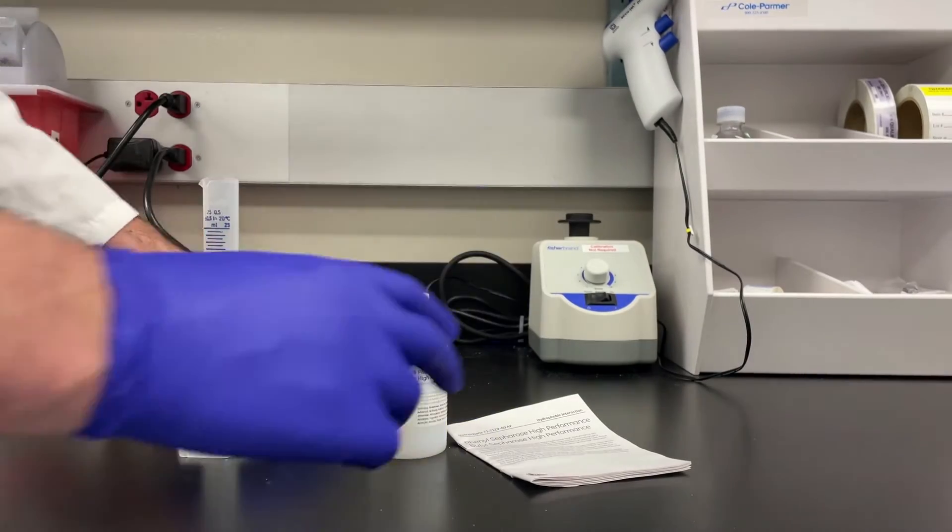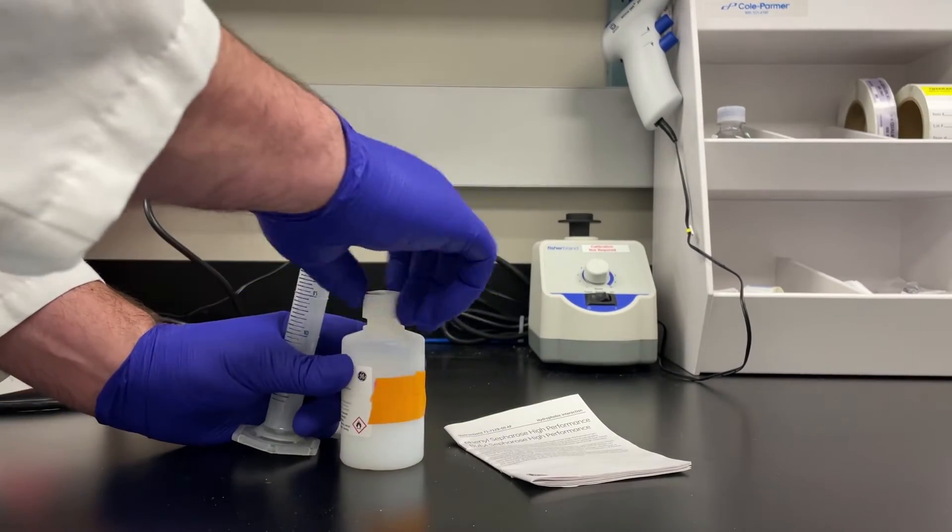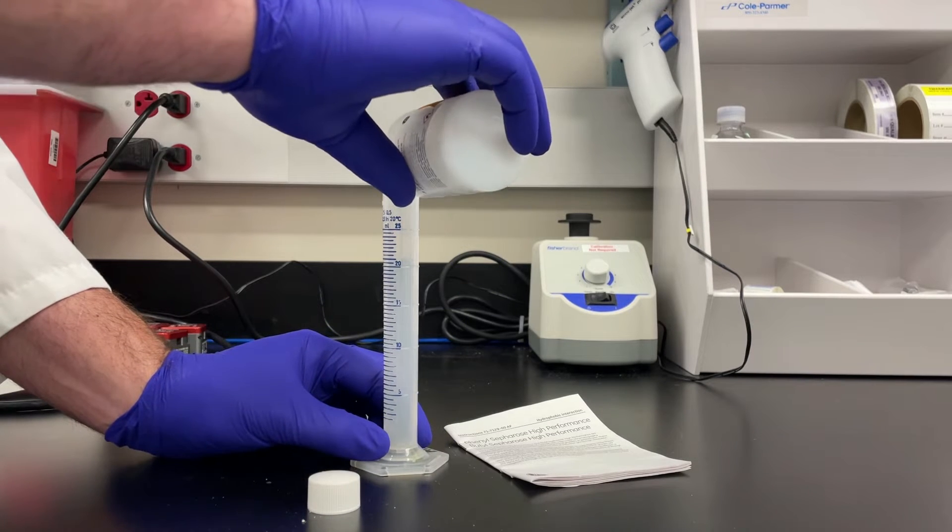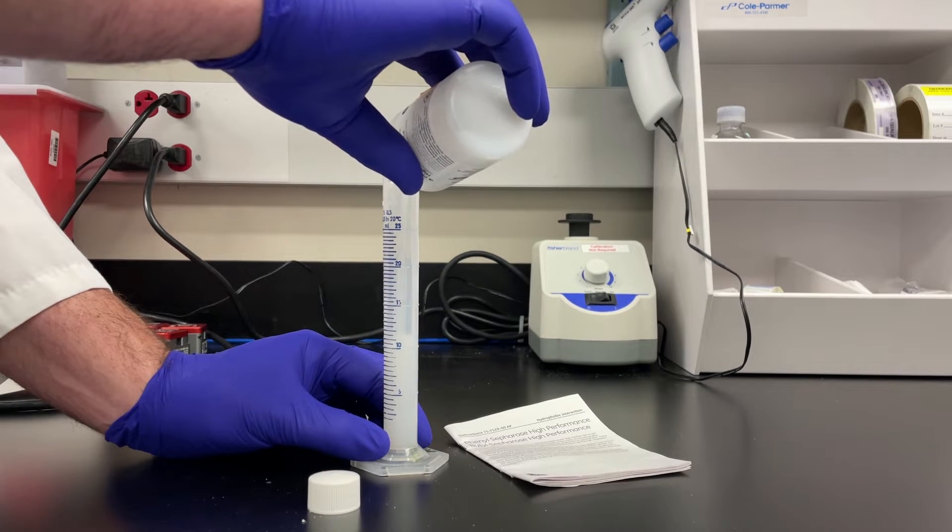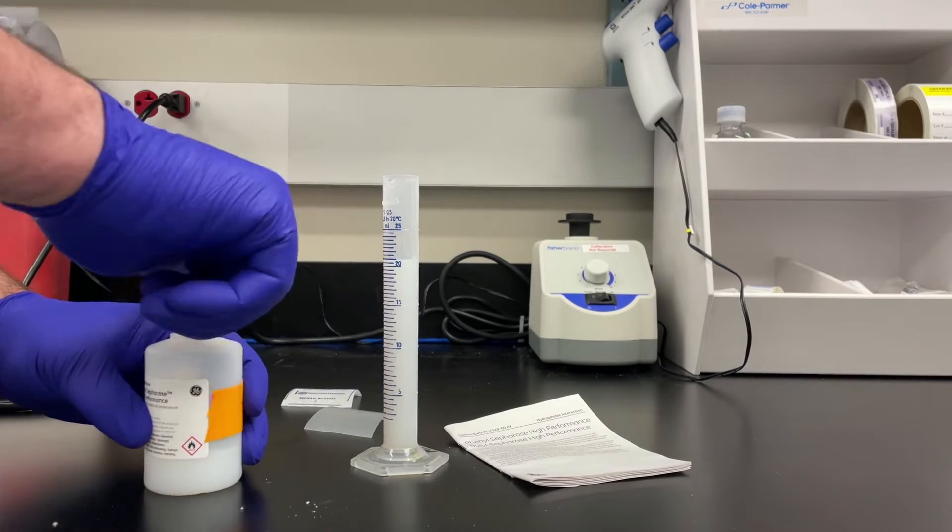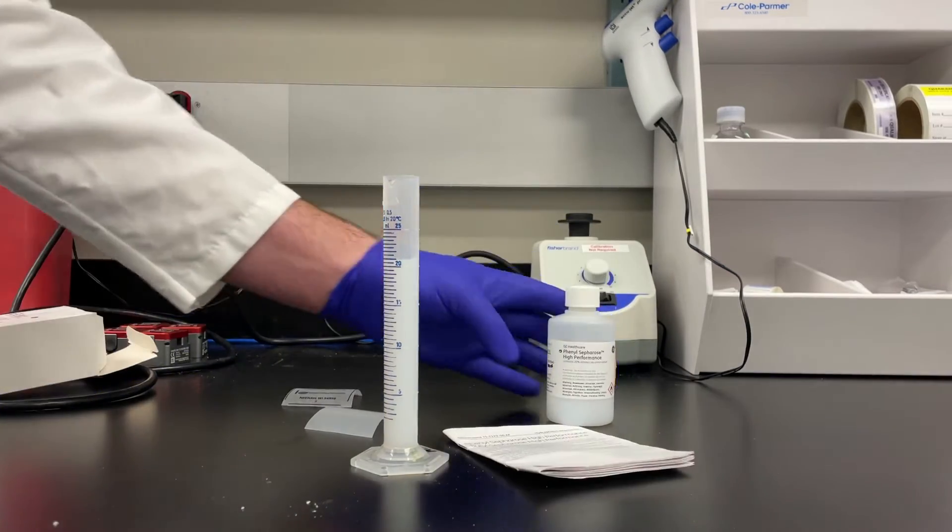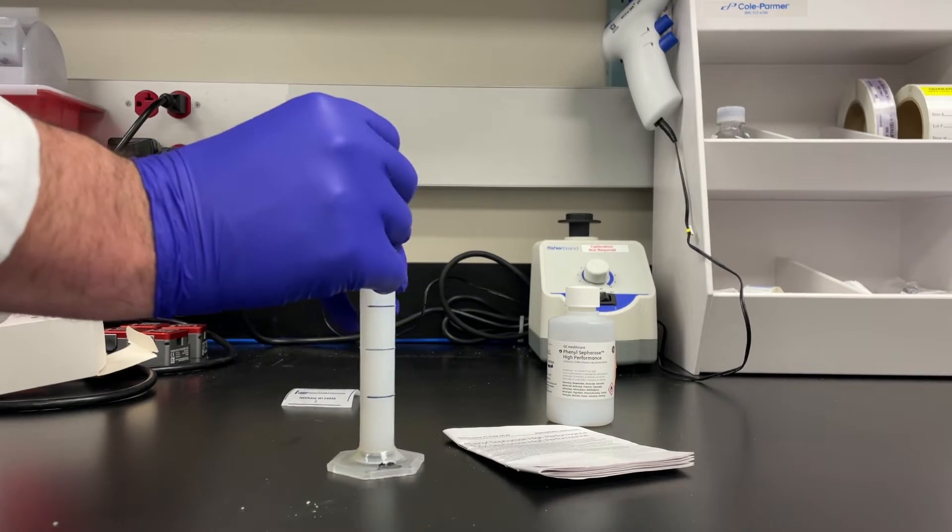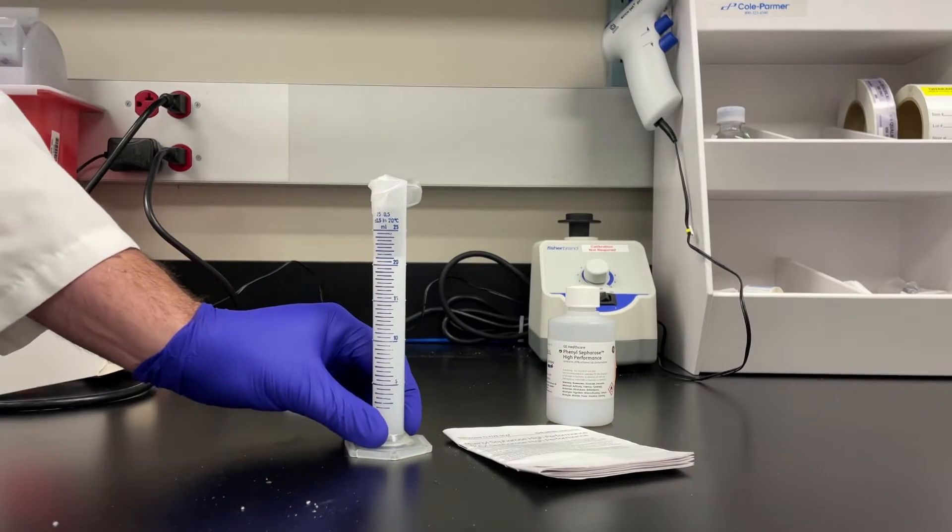Once we've finished resuspending the resin, we have a slurry. We're gonna pour about 20 mils into a graduated cylinder. It doesn't matter whether I get 20 mils exactly or not. I'm just gonna divide one number by the other and let this settle overnight so I can see what the percent solid versus liquid is, and that'll be my percent slurry.